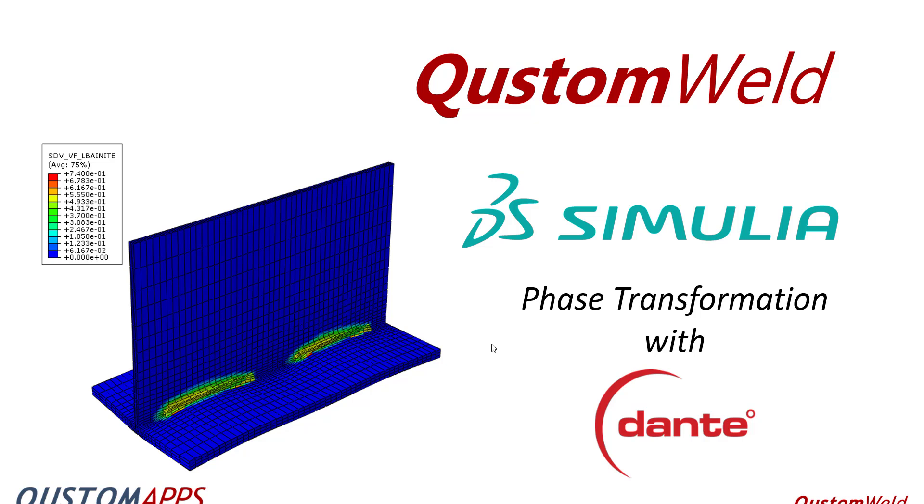Hello and welcome to a discussion on using phase transformation based on Dante software but within CustomWeld. For those of you who are not familiar, CustomWeld is an Abacus CAE plug-in that has been developed to take advantage of all the latest enhancements that DS had created for 3D printing. Our talk is going to be basically how CustomWeld and Dante software have been integrated into a package to make using the phase transformation very simple in welding simulations.